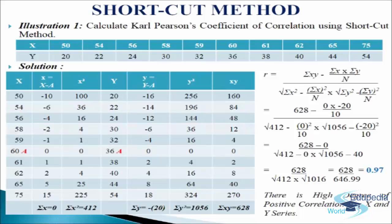In the next column we will write y square: minus 16 square comes 256, minus 14 square comes 196, minus 12 square comes 144, minus 6 square comes 36, minus 4 square comes 16, 0 square comes 0, 2 square comes 4, 4 square comes 16, 8 square comes 64, and 18 square comes 324. We will add up the values and get sigma y square equals 2056.